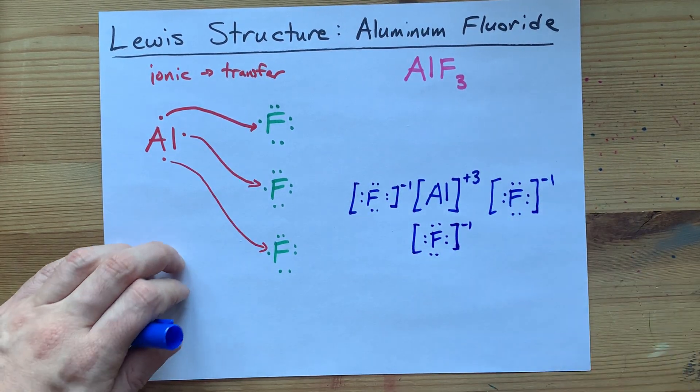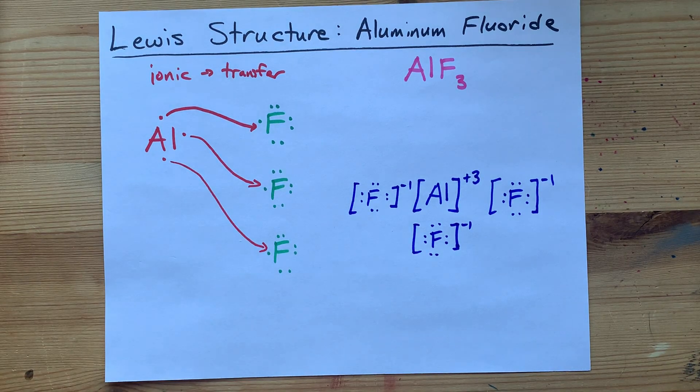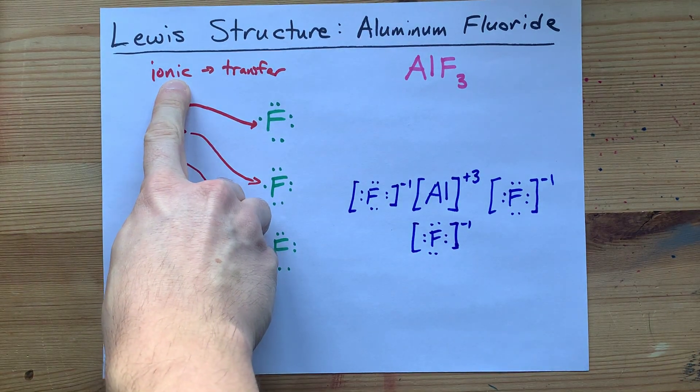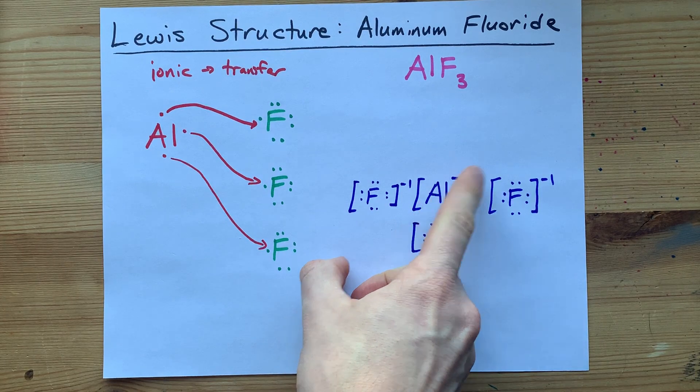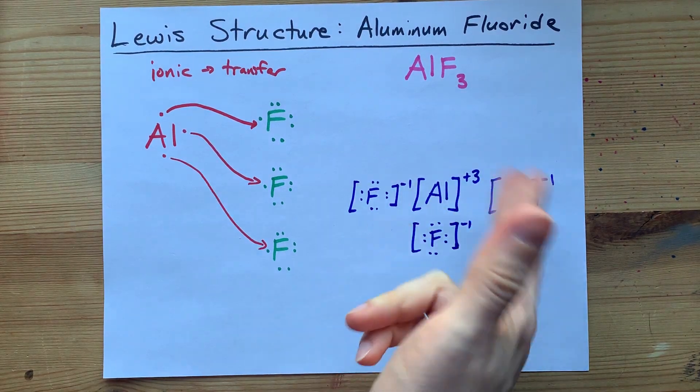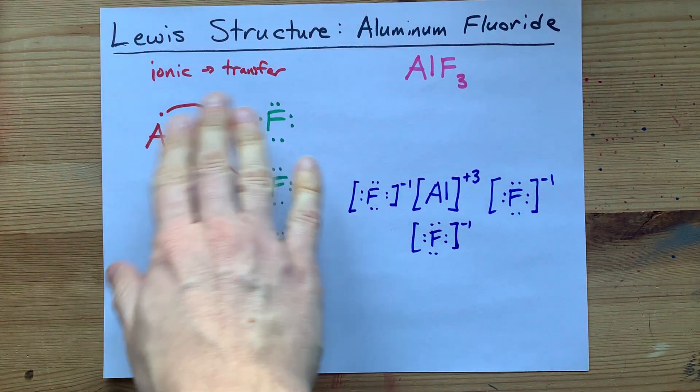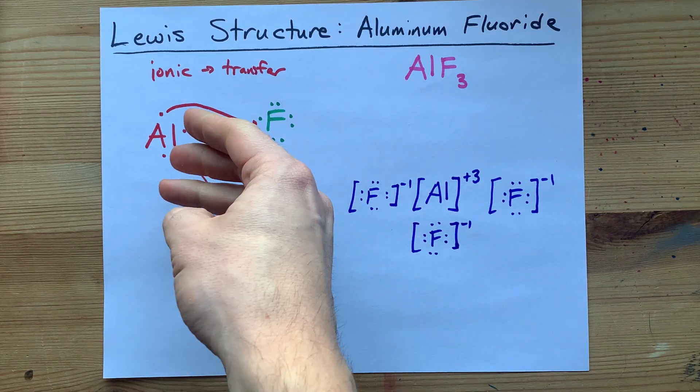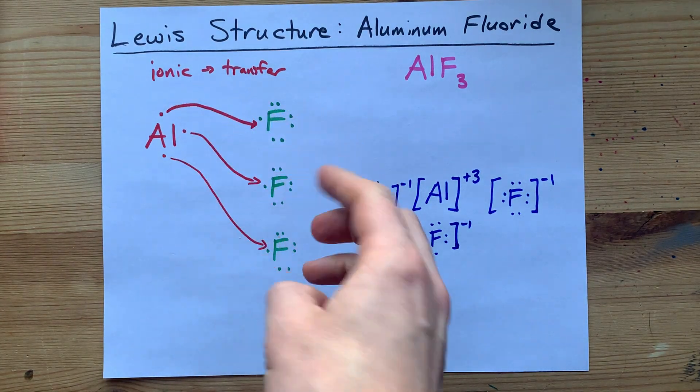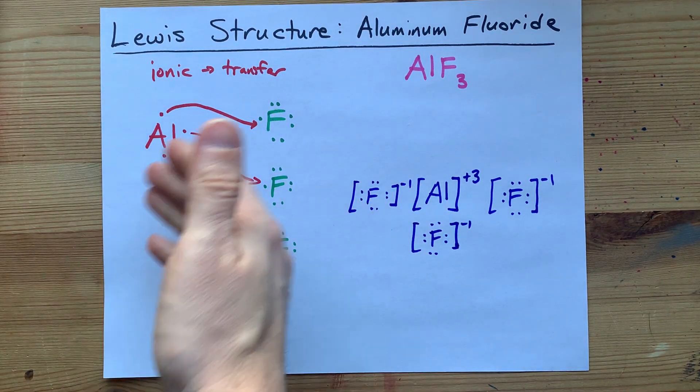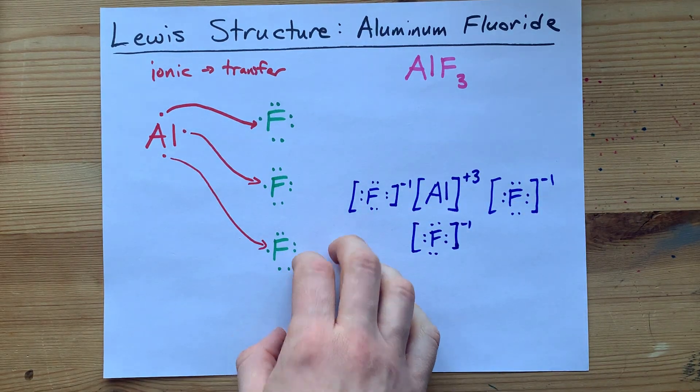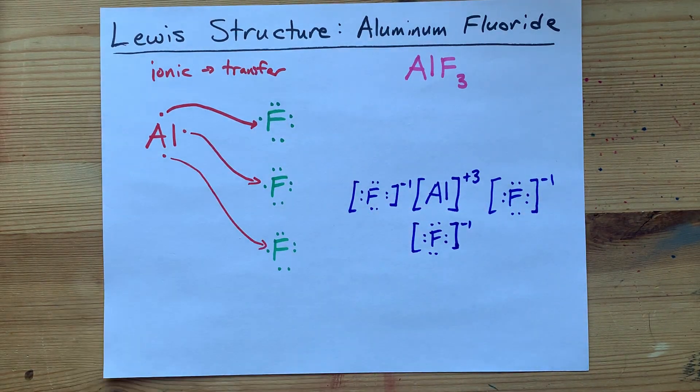That's it. This is my Lewis structure for aluminum fluoride. It's an ionic compound. As you can see, we have charges or ions in the structure. And here we're showing the transfer. Each of aluminum's three electrons go to a different fluorine atom. It's a beautiful thing, and it was easy. Thanks to you. Best of luck.